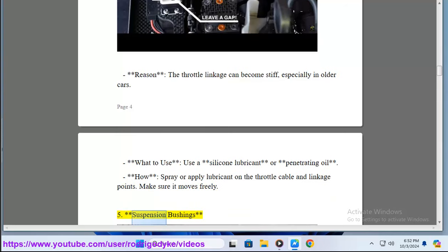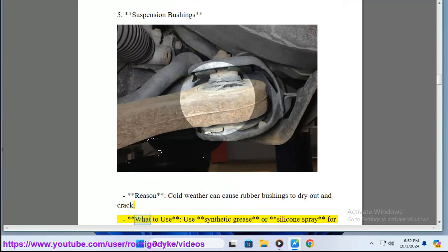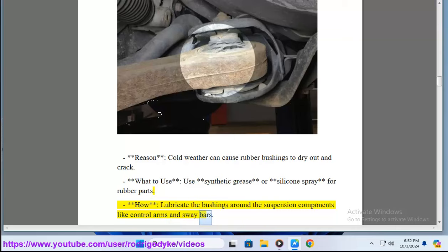5. Suspension Bushings. Cold weather can cause rubber bushings to dry out and crack. What to use? Use synthetic grease or silicone spray for rubber parts. How? Lubricate the bushings around the suspension components like control arms and sway bars.